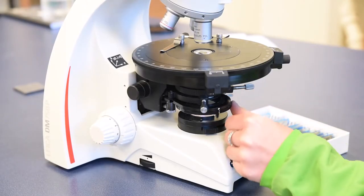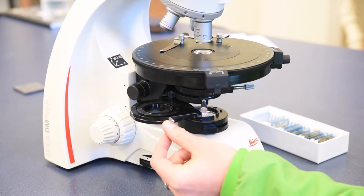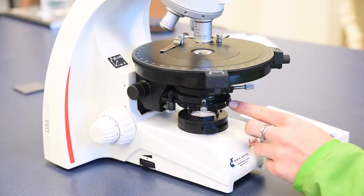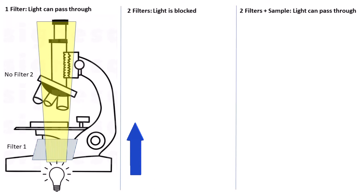In the microscope, this filter is located between the light source at the base and the sample. This allows the unidirectional wavelength of light to travel up towards the viewer.